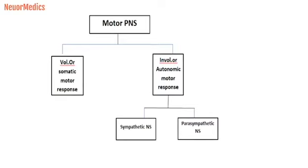The autonomic system, which is part of the motor peripheral nervous system, is again subdivided into the sympathetic nervous system and the parasympathetic nervous system. That we will discuss later.